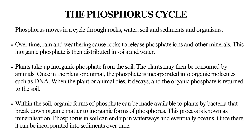This inorganic phosphate is then distributed in soils and water. Plants take up inorganic phosphate from the soil. The plants may then be consumed by animals. Once in the plant or animal, the phosphate is incorporated into organic molecules such as DNA. When the plant or animal dies it decays and the organic phosphate is returned to the soil. Within the soil, organic forms of phosphate can be made available to plants by bacteria that break down organic matter to inorganic forms of phosphorus — this process is known as mineralization.